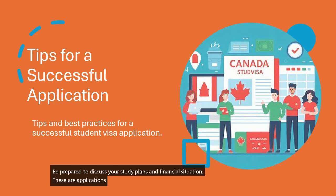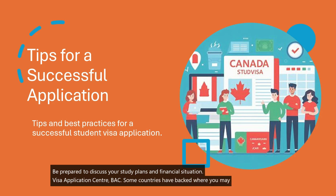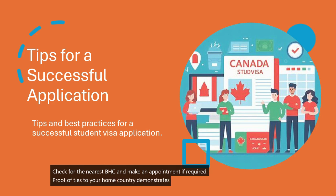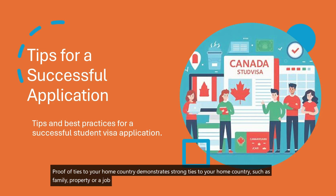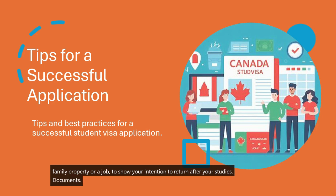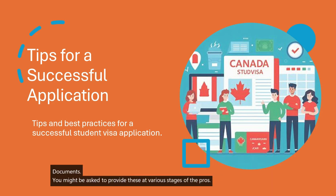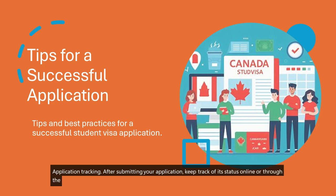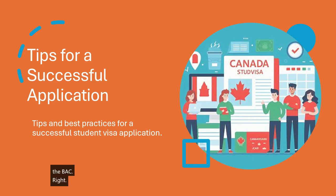Eleventh, Attend an Interview: you may be required to attend an interview at your local Canadian embassy or consulate — be prepared to discuss your study plans and financial situation. Twelfth, Visa Application Centre (VAC): some countries have VACs where you may need to submit your application in person — check for the nearest VAC and make an appointment if required. Thirteenth, Proof of Ties to Your Home Country: demonstrate strong ties to your home country, such as family, property, or a job, to show your intention to return after your studies. Fourteenth, Keep Copies of All Documents: make photocopies of all your documents and keep them in a safe place. Fifteenth, Be Honest and Thorough: provide accurate and truthful information in your application and interviews — falsifying information can lead to visa denial or even future inadmissibility to Canada.